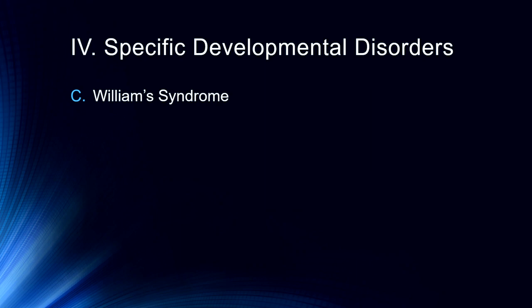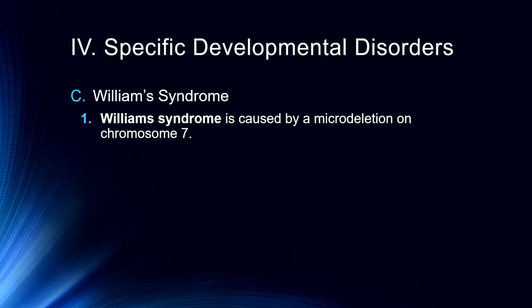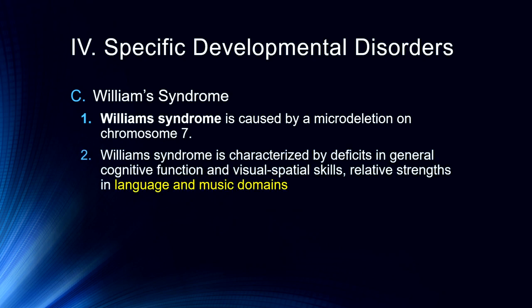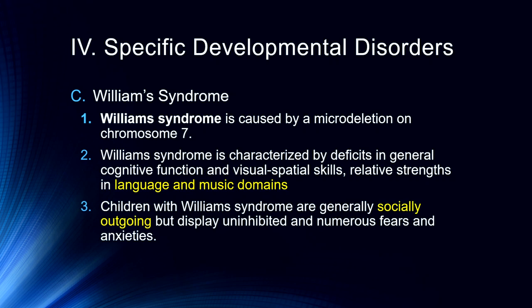Williams syndrome used to be tied in more directly with autism spectrum disorders, but it is a separate syndrome. It's caused by a micro-deletion on chromosome 7. This particular syndrome is characterized by deficits in general cognitive functioning and visual-spatial skills, but interestingly has a relative strength in both language and music domains. In fact, oftentimes Williams syndrome kids are what we might call a musical savant — very gifted in musical ability. Children with Williams syndrome are generally socially outgoing, but they can display some uninhibited tendencies and have quite a bit of fear and social anxiety. Treatment often involves good cognitive behavioral therapy, social development, group therapy, and socialization.